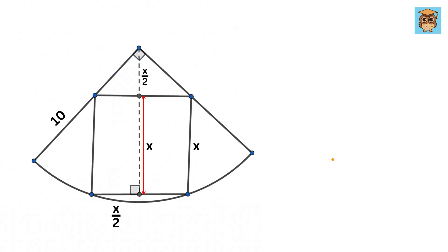Now we will construct a line from the center of this quarter circle to this vertex of the square. This line is also the radius of the circle, and thus it will be 10.